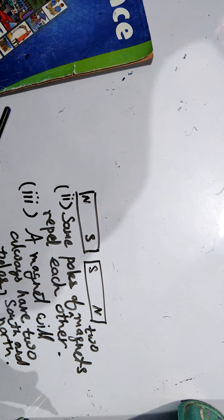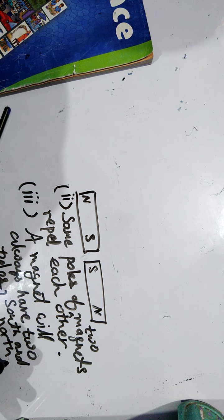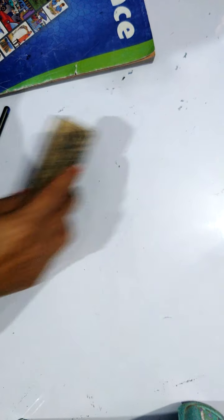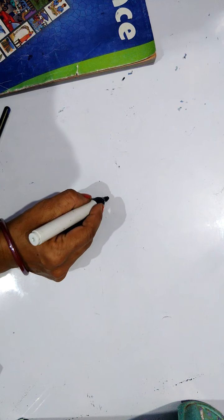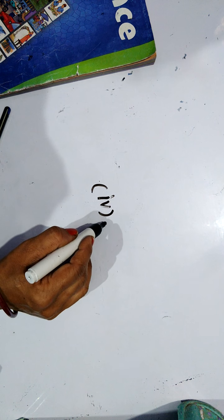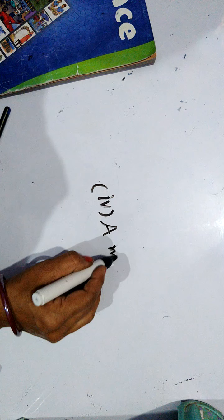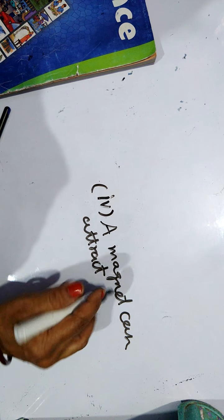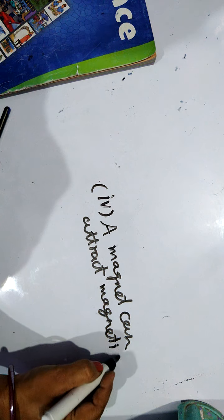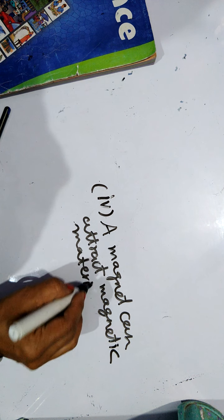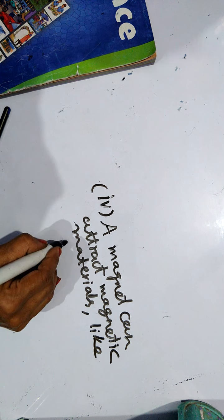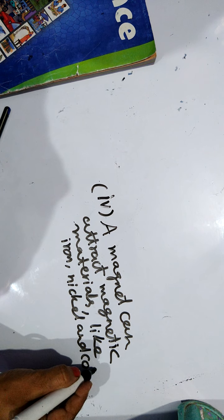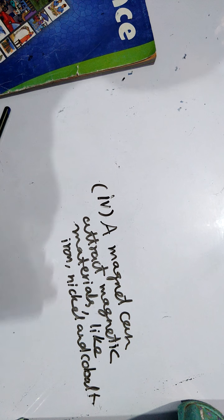So these are three properties of magnet. You can write these three properties whenever you need to write properties of magnet. Another property you can add is the fourth property: a magnet can attract magnetic materials like nickel and cobalt. These are magnetic materials.